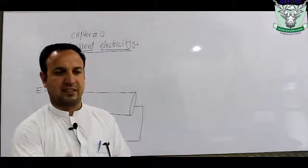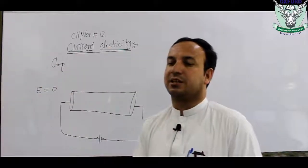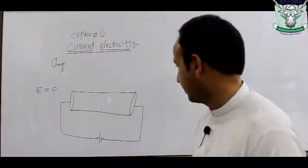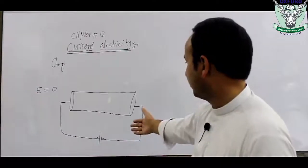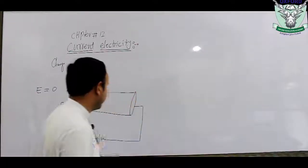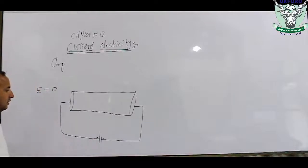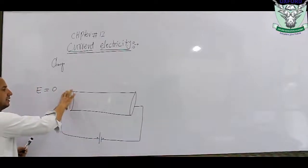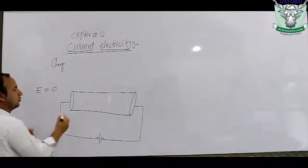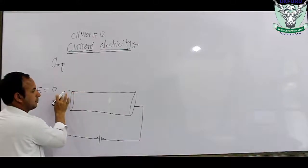The battery works through a chemical process — chemical energy is the source of energy. The battery can be connected to a circuit, creating an electric field applied across the conductor from the positive to high potential side.